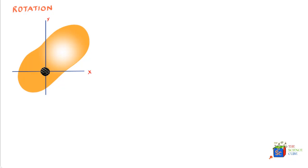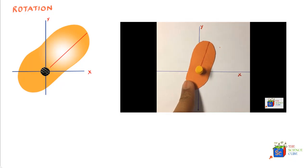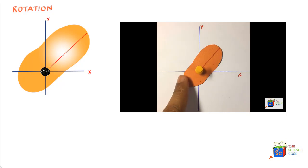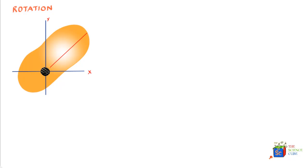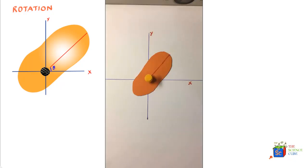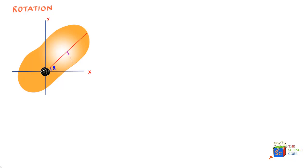Imagine there is a red tape stuck on the rigid body. This tape serves as a reference line which will mimic the motion of the rigid body — so if the rigid body moves by an angle theta, so will this strip of tape. To start with, let's assume it is at an angle theta with the horizontal axis, making an arc s, where the length of the arc is s and the radius of the circle is r.